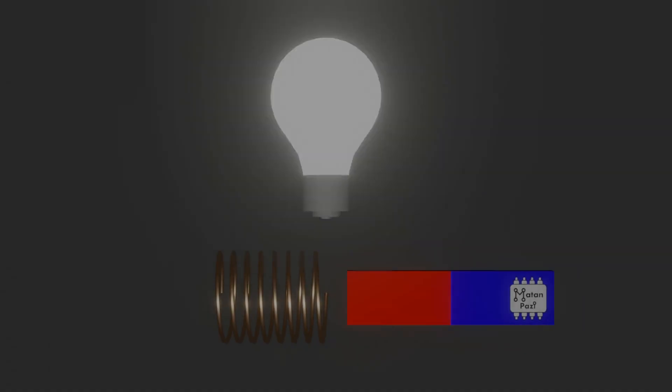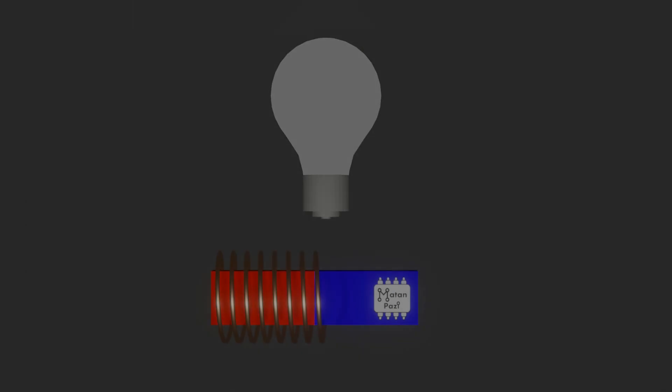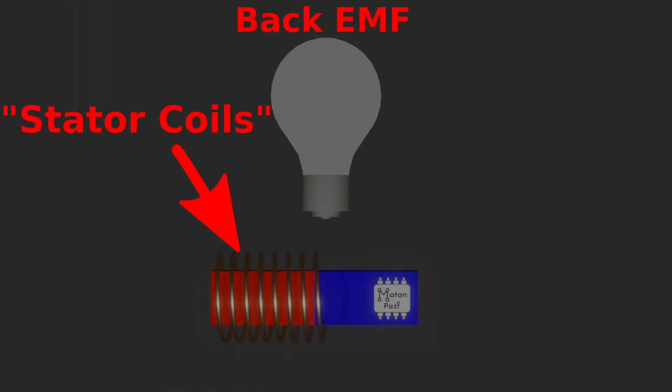Well, the main culprit in permanent magnet motors are the magnets themselves. An electromotive force, also known as back EMF, which opposes the rotation, is induced in the stator coils due to Faraday's law of induction, as the magnetic field in the rotor passes through them.